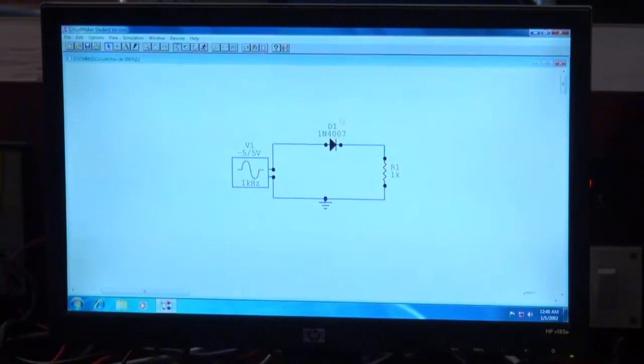Here you can see this is a circuit in which we are using a signal generator, a diode and a resistor. So input will be a full sine wave AC signal and the output will be half wave rectified waveform.